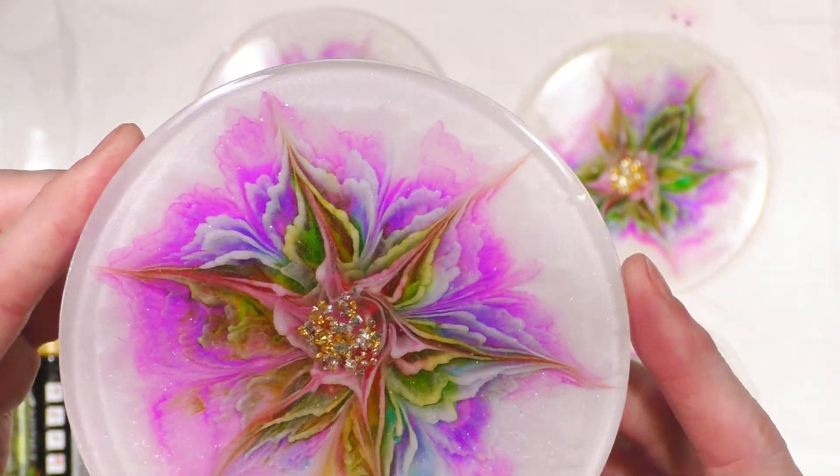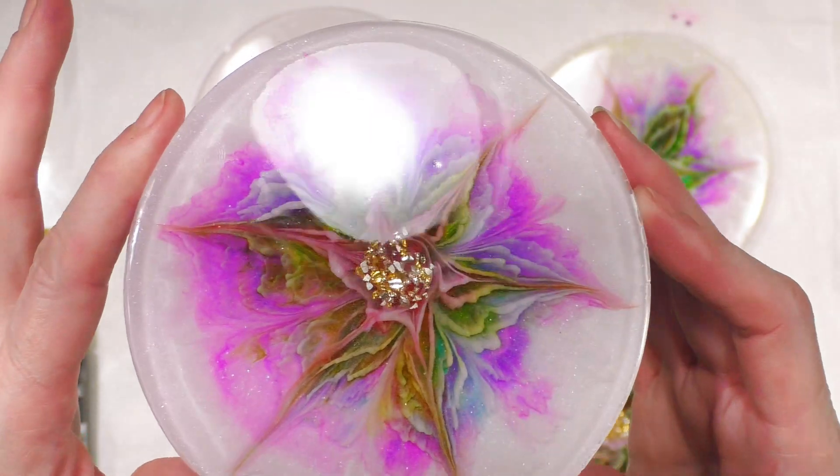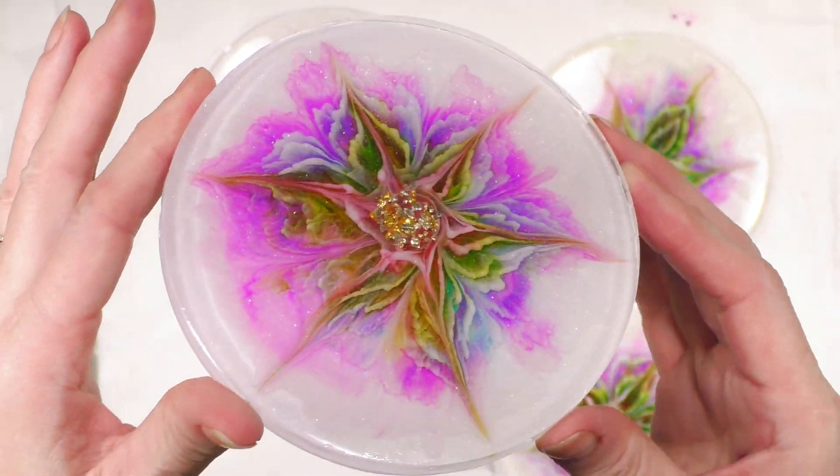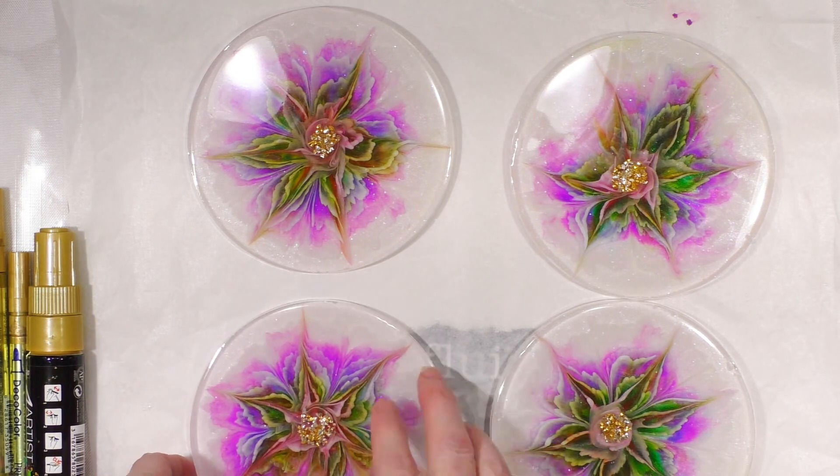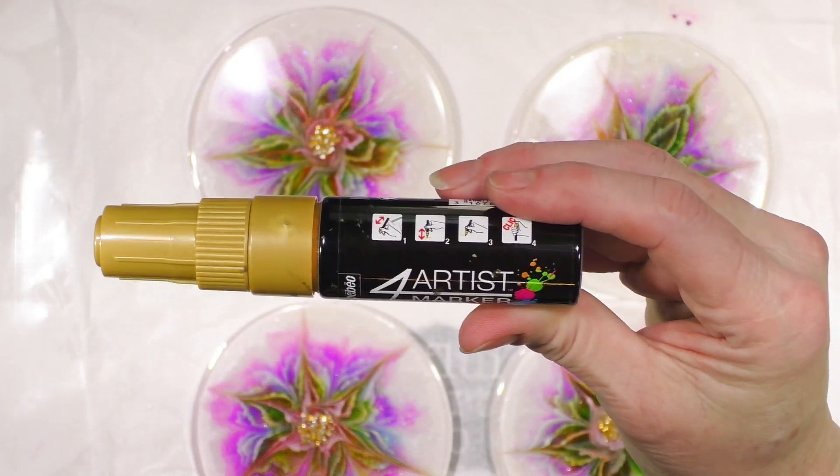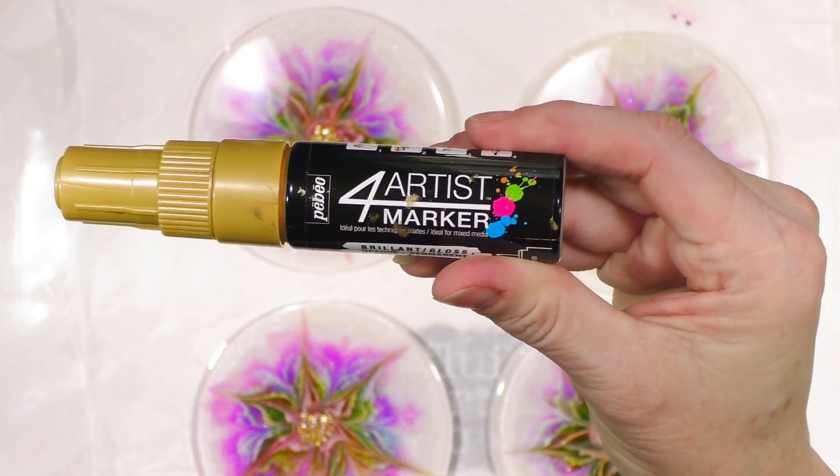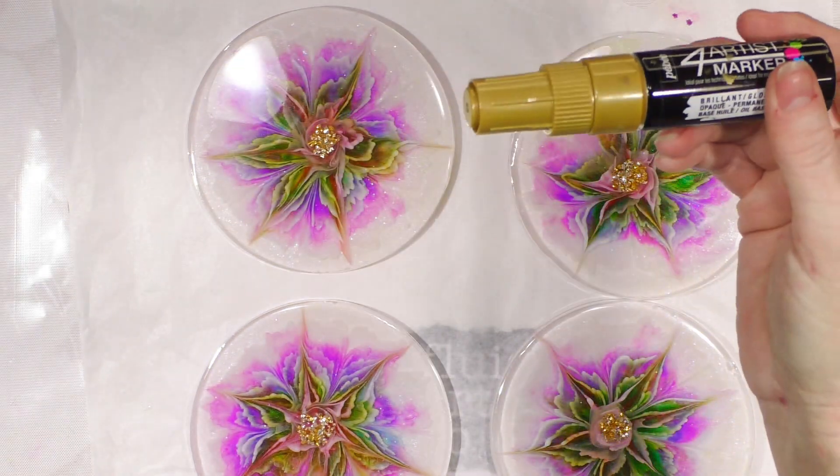Okay, there's a close-up with the white shimmer background. And then the final step will be I'm going to add gold edges with Pebeo Artist for Artist marker. It's a well base. Just press.